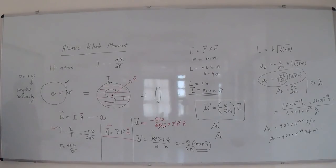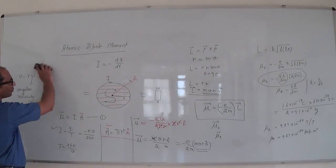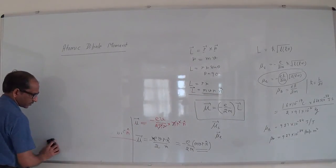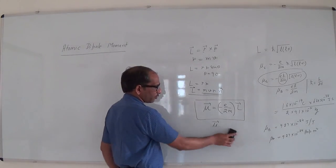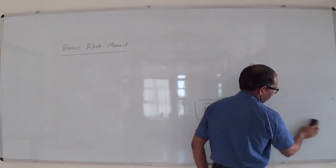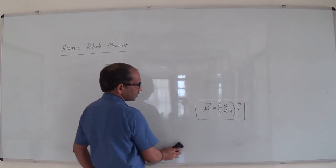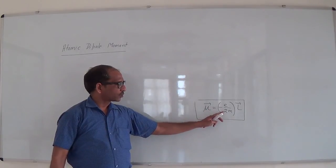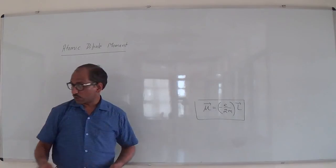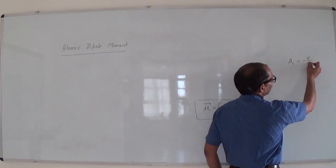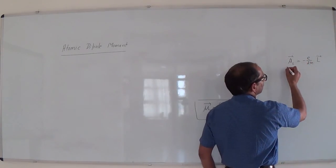Now that we have knowledge of atomic dipole moment, we need to discuss what role the atomic dipole moment plays when we keep a specimen or any magnetic material in a uniform magnetic field — what happens inside the atom. We have the result that mu_l = -(e/2m) · L-vector, relating the magnetic dipole moment to orbital angular momentum.